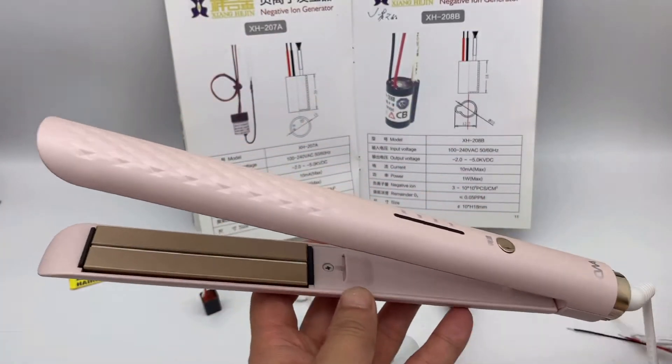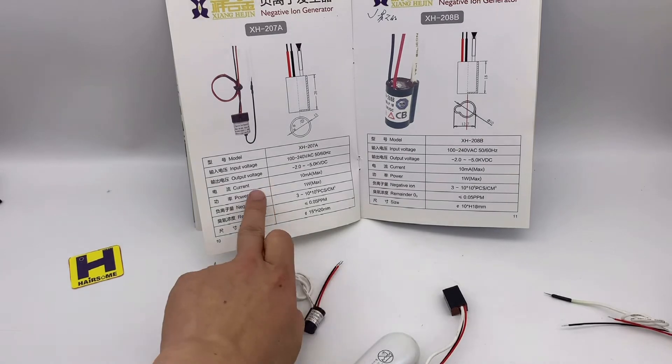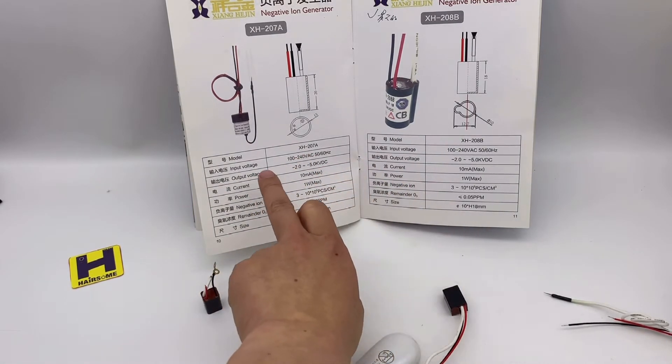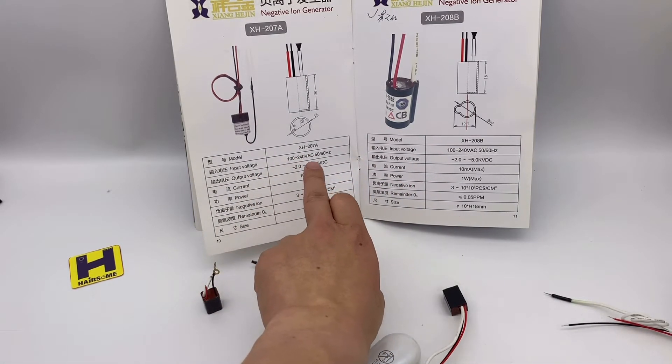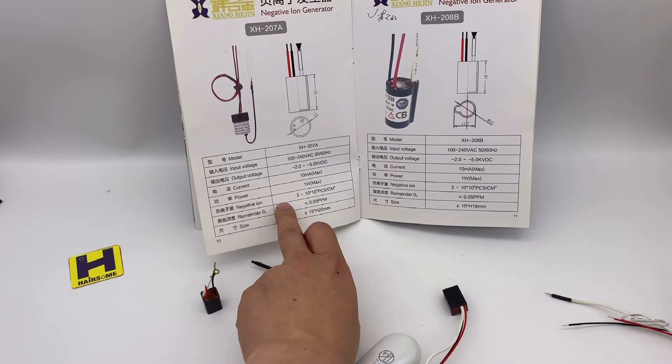I hope you can understand very well by explaining this. And then there is a specification here. There is a model number, input voltage, universal voltage, output voltage, current, power, negative iron.